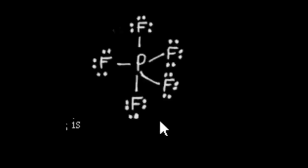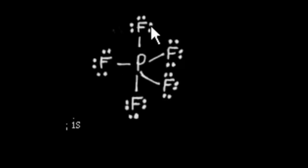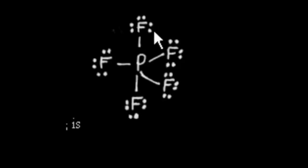This here is the Lewis structure for PF5. You can see five single bonds around the phosphorus, and then the five fluorines surrounding the phosphorus with three lone pairs on each fluorine.